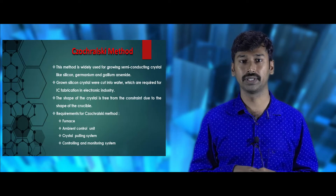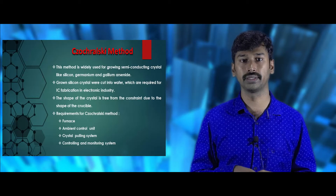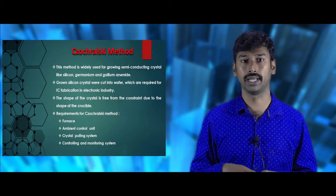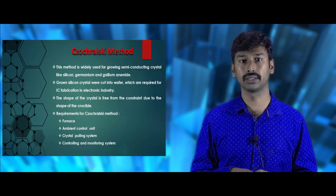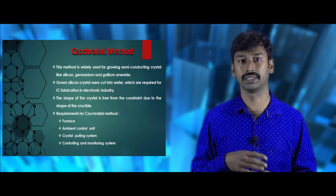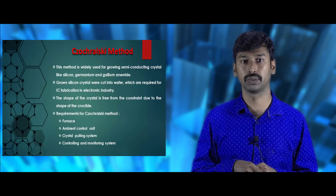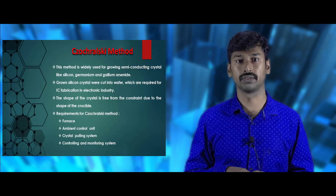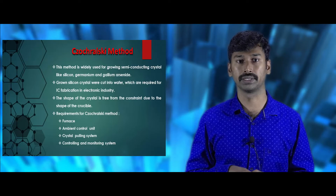The Czochralski growth technique is widely used for growing semiconductor materials like silicon, germanium, and gallium arsenide. These silicon crystals are cut into wafers which are required for IC fabrication in the electronics industry. The Czochralski crystal growth method requires a furnace, controlling atmosphere, pulling system, and monitoring system.